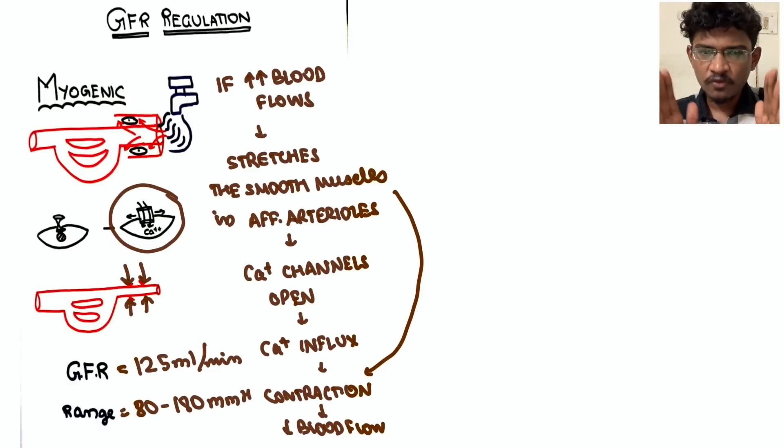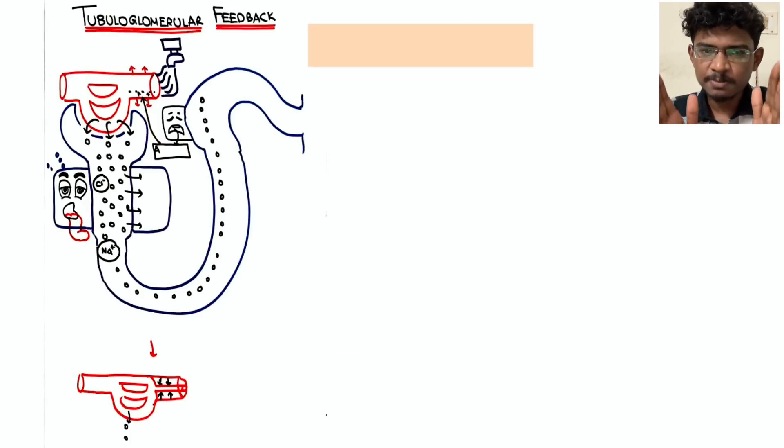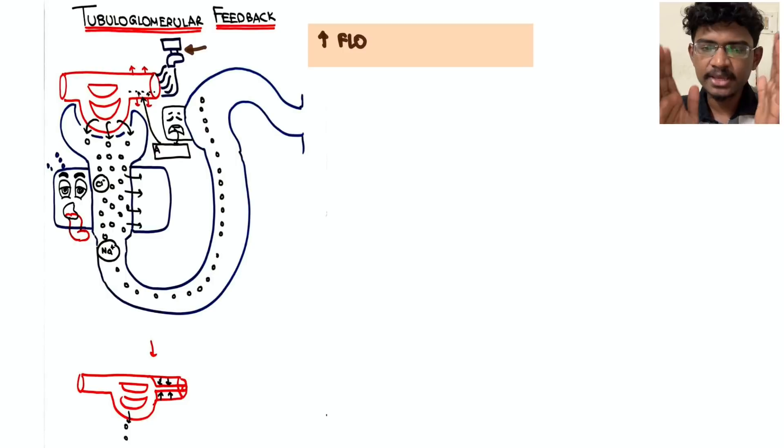This autoregulation is possible only if the blood pressure is between 80 to 180 millimeter mercury. If it is less or above, renal autoregulation will be lost. Next, tubuloglomerular feedback - what is this interesting mechanism?